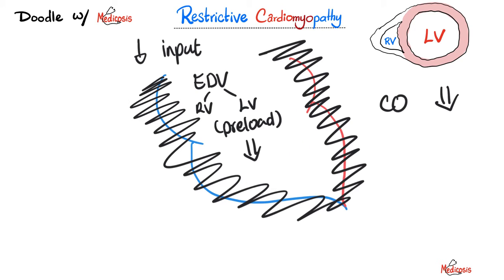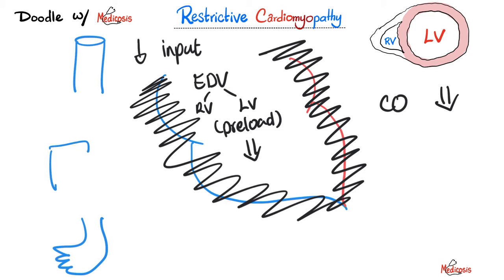If the right side of the heart is affected, I get signs and symptoms of right-sided heart failure: jugular venous distension upstairs, lower limb edema downstairs, and in between — congestion of the liver, also known as cardiac cirrhosis, or simply hepatomegaly.